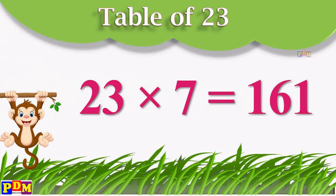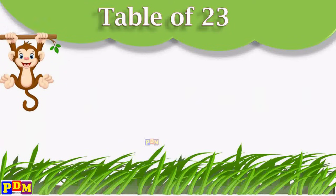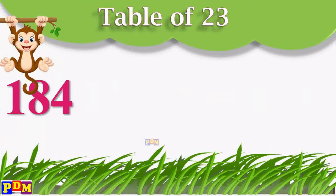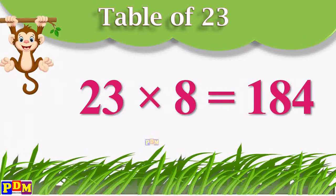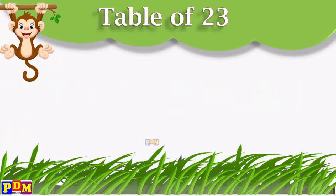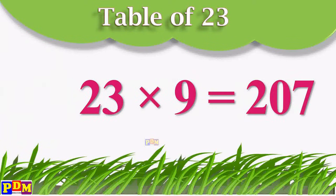23 sevens are 161. 23 eights are 184. 23 nines are 207.